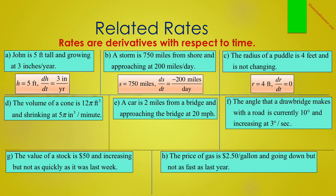In B, a storm is 750 miles from shore and approaching at 200 miles per day. I'll choose S to represent the distance from the storm, and therefore S is 750 miles, and DS/dt is negative 200 miles per day — negative because it is approaching and therefore getting smaller. In C, the radius of a puddle is 4 feet and is not changing. So R is 4 feet, and since it's not changing, DR/dt equals 0.